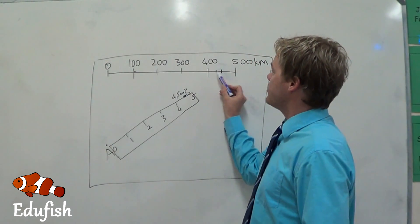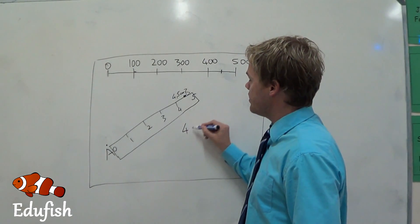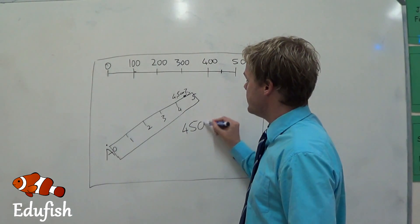And we know that 100 divided by 2 is 50. So, it's 400 plus that 50, and you'll get 450 kilometers.